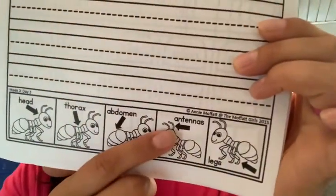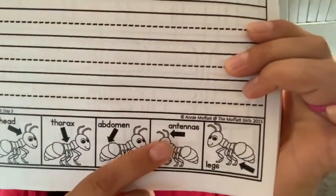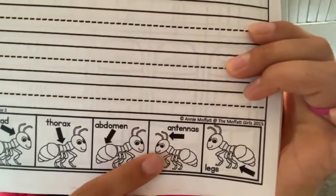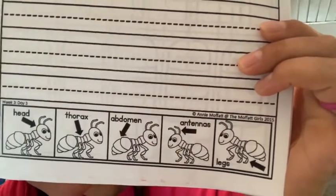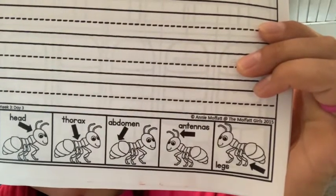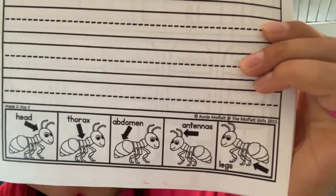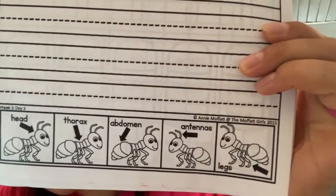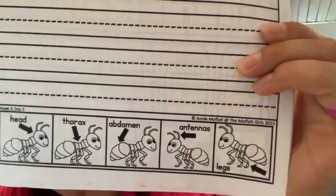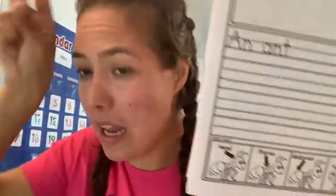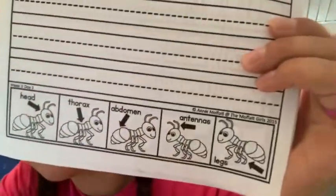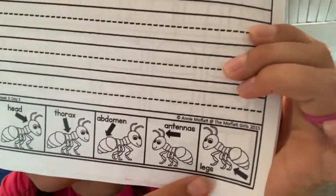We also have their antennas. Their antennas help them hear, smell, see, taste, and feel. That's how they communicate — by rubbing up against each other and communicating with their antennas.